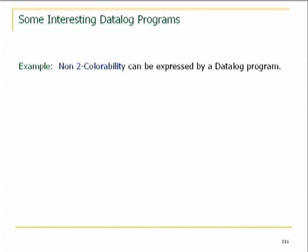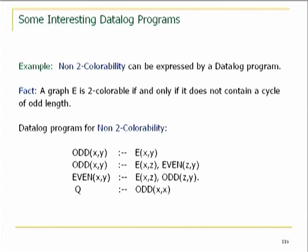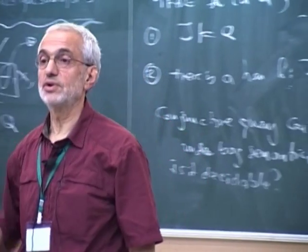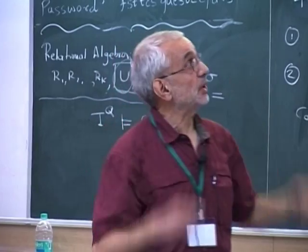Non-two-colorability can be expressed by a datalog program. Non-two-colorability is the same as 'there exists a cycle of odd length.' We take the previous program for computing odd and even: Odd(x,y) and Even(x,y) say there is a path of odd or even length between x and y. Then we have another predicate Q, a zero-ary predicate, that is true if and only if there is an x such that there is a cycle of odd length from x to x. So you can do non-two-colorability in datalog.